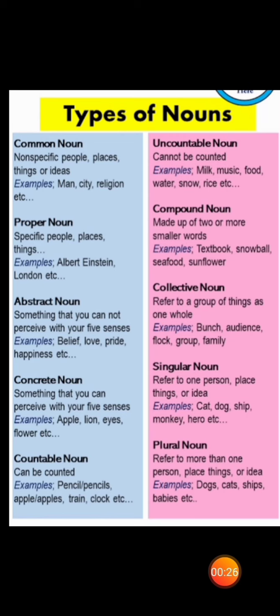What is a proper noun? Proper noun talks about specific people, places, things. For example, Albert Einstein, London etc.